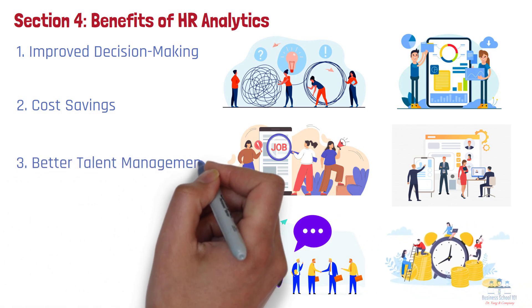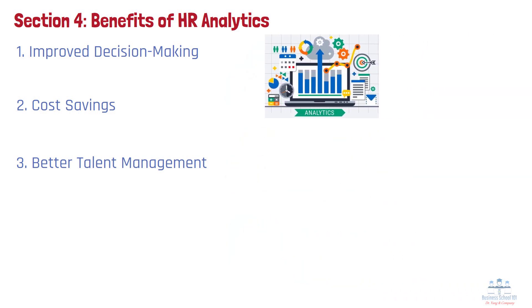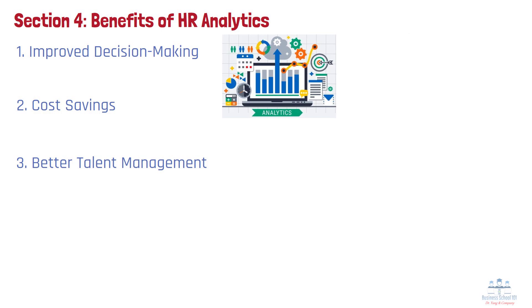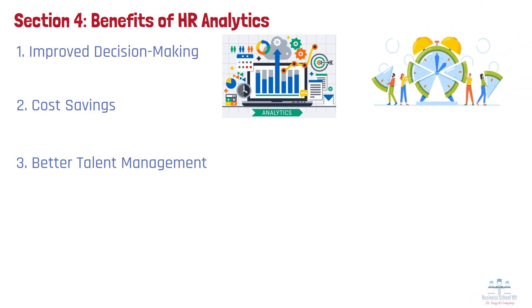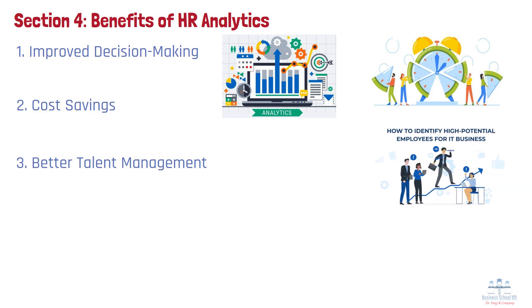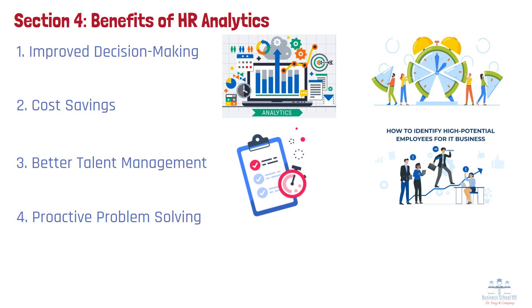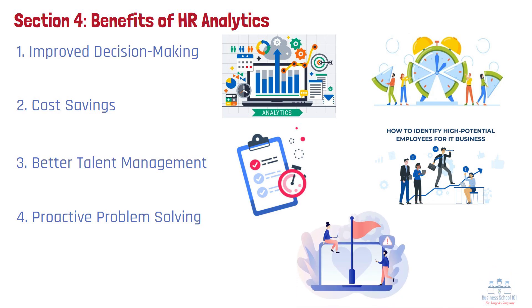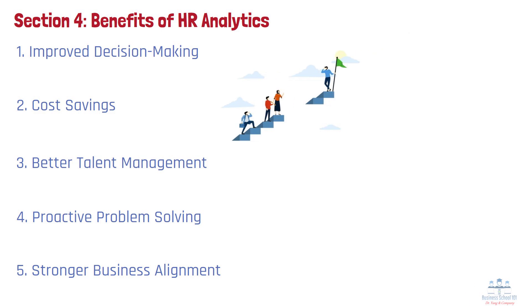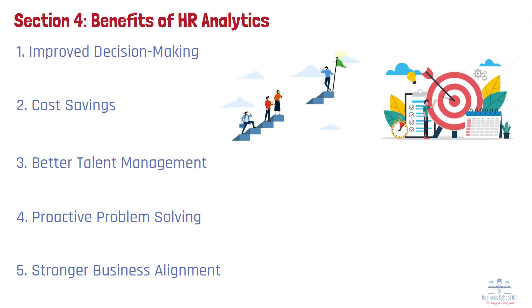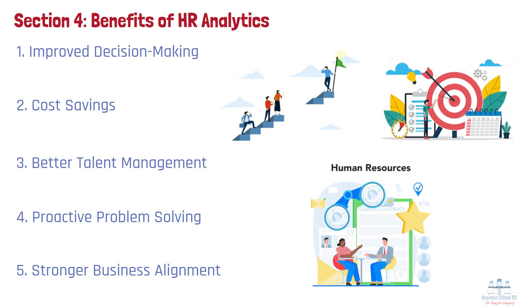Number 3: Better talent management. Analytics provides detailed insights into employee performance, learning progress, and growth potential. This helps managers personalize development plans, allocate resources for upskilling, and make smarter succession planning decisions. For example, high-potential employees identified through data can be fast-tracked for leadership roles. Number 4: Proactive problem solving. Rather than reacting to issues after they arise, HR analytics allows for early detection of potential problems, like declining engagement scores or rising absenteeism. These trends can be flagged before they become crises, enabling HR to implement targeted solutions such as mentorship programs or flexible work policies. Number 5: Stronger business alignment. HR analytics bridges the gap between people strategy and business outcomes. By connecting metrics like productivity, turnover, and training ROI to company goals such as revenue growth or customer satisfaction, HR can clearly demonstrate its impact, positioning HR as a strategic partner rather than just an administrative function.